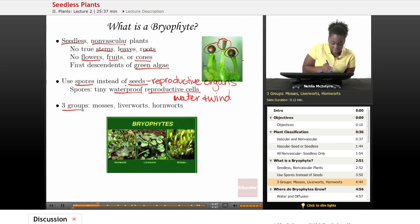Now, bryophytes are classified into three different groups. The first group is the mosses, then we have liverworts and hornworts, and we'll discuss those.